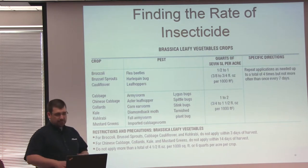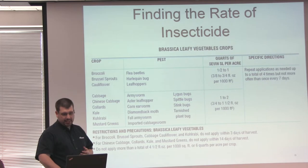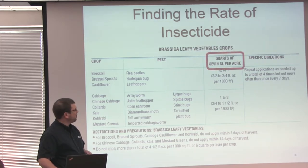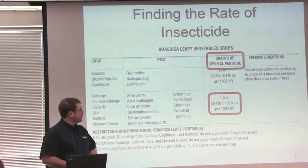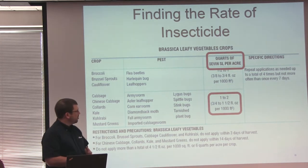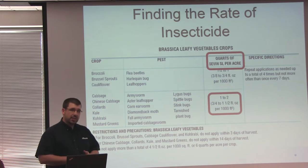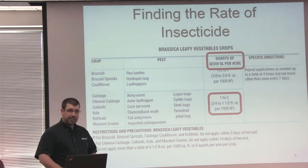Now that we know the specific directions and restrictions, we take a look at how much we can spray per acre. We look at the column showing quarts of Sevin per acre, and we find that we can spray 1 to 2 quarts per acre, or 3 quarters to 1.5 fluid ounces per 1,000 square feet. We'll be using the per 1,000 square feet rate in this example.